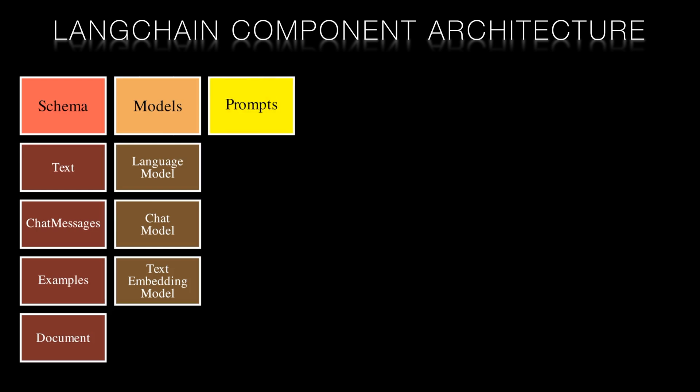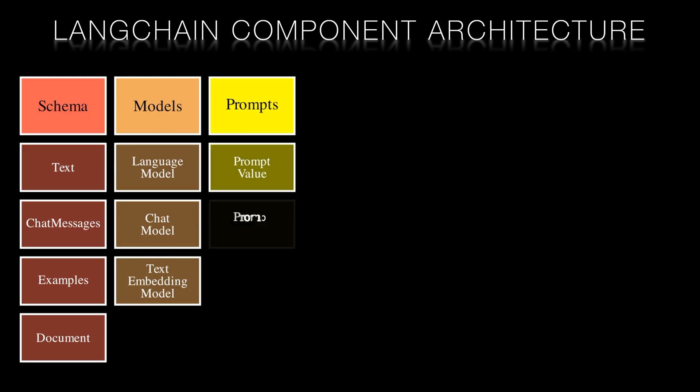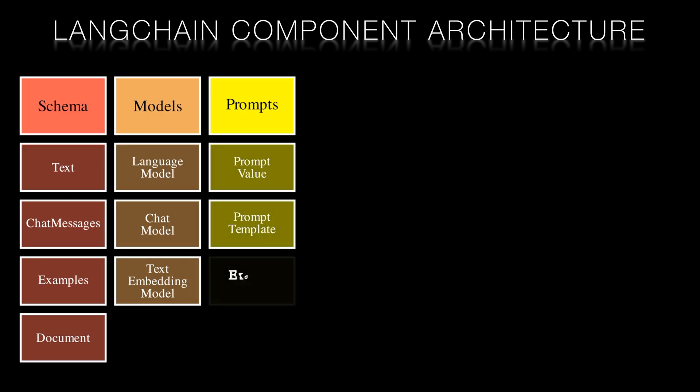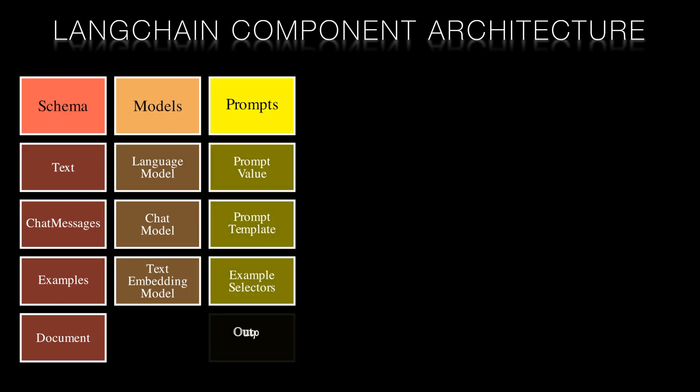Prompts are the interfaces that facilitate communication between the user and the models. They consist of prompt value, prompt template, example selectors, and an output parser. They work in tandem with the models to format user input, generate suitable prompts, and parse the model's output into a human-understandable format.